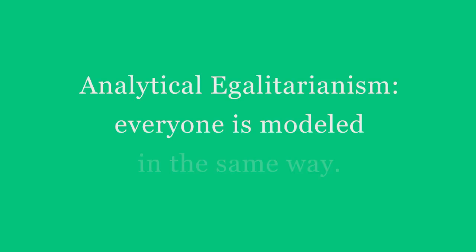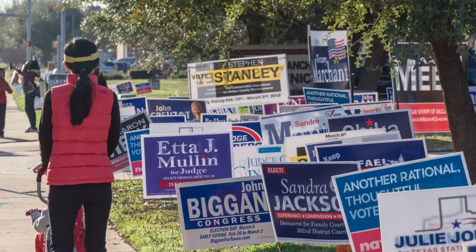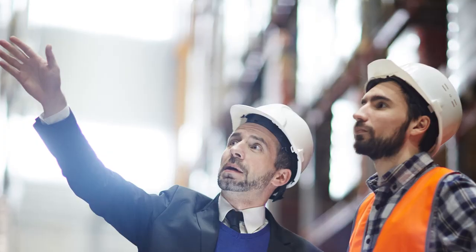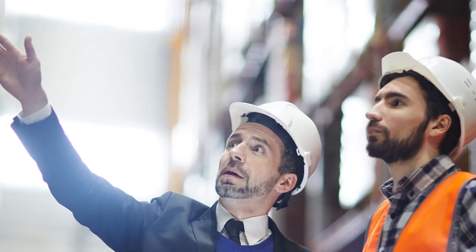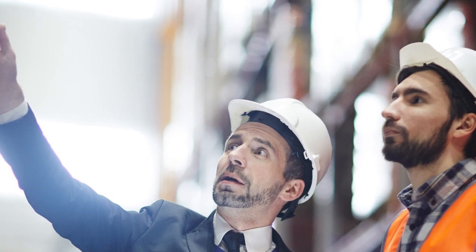Unlike a lot of political science, public choice typically assumes that political actors act in their rational self-interest and respond to incentives just like everyone else. A key idea is thus analytical egalitarianism. Everyone is modeled in the same way. We assume that voters, politicians, and bureaucrats — just like consumers, entrepreneurs, and managers — act in their rational self-interest.